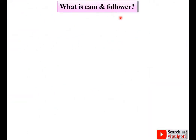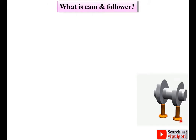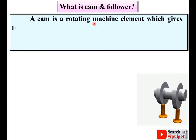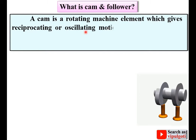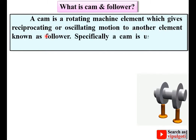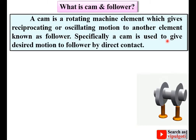So first of all, what is CAM and Follower? A CAM is a rotating machine element which gives reciprocating or oscillating motion to another element known as Follower. Specifically, a CAM is used to give desired motion to the Follower by direct contact.